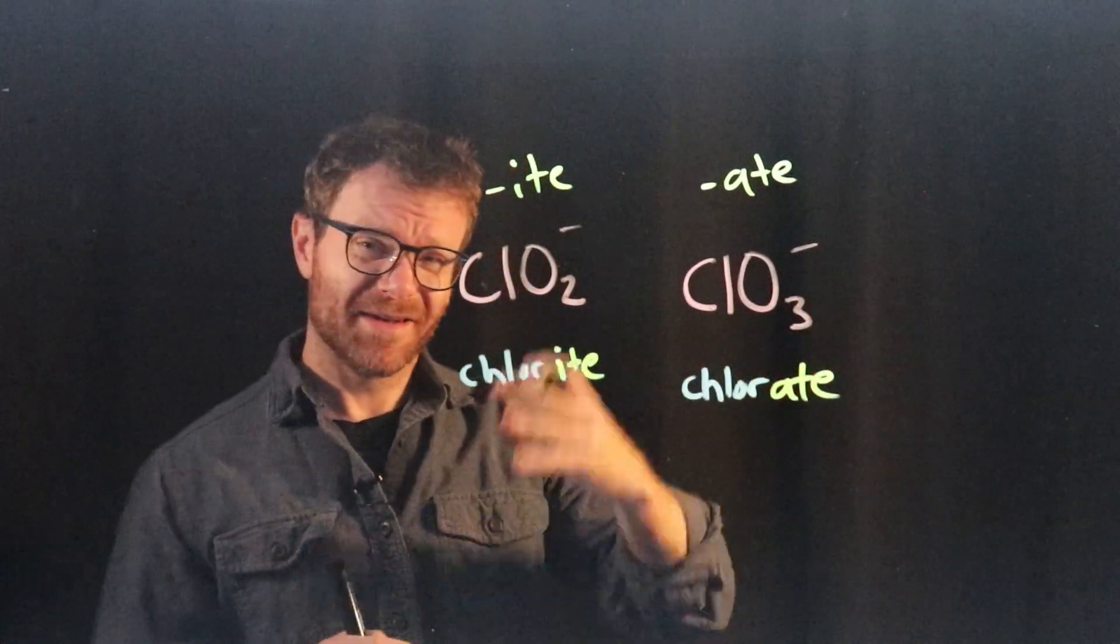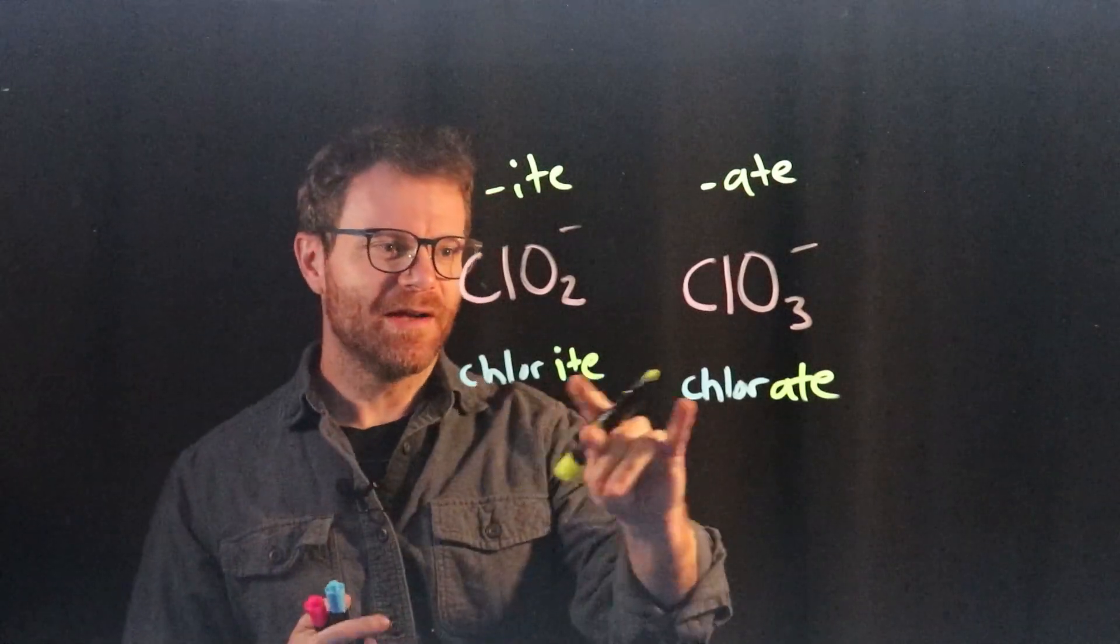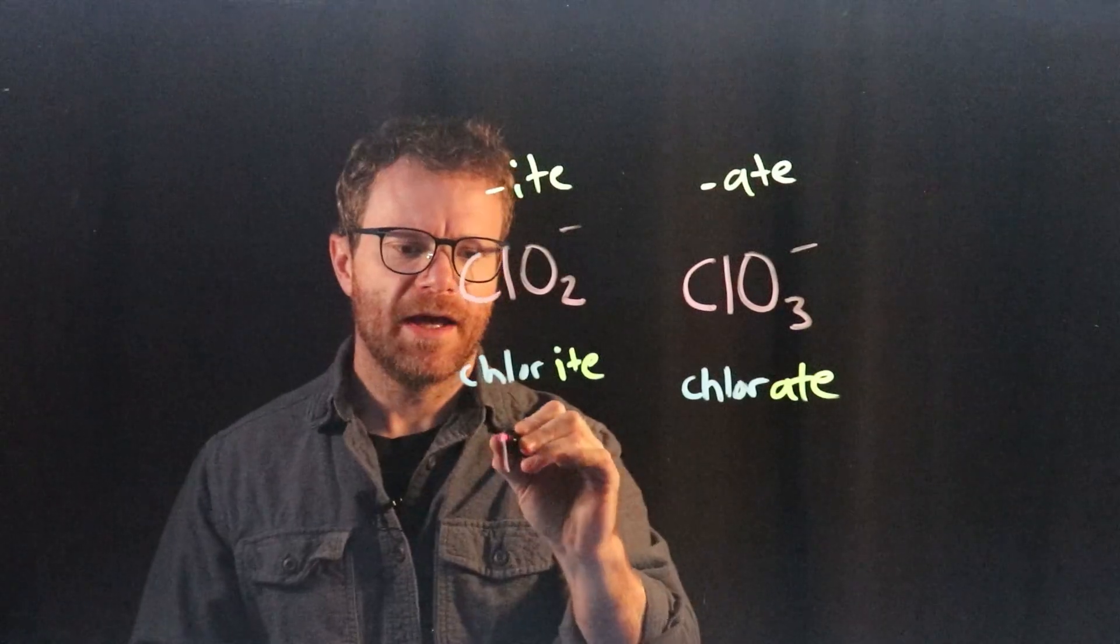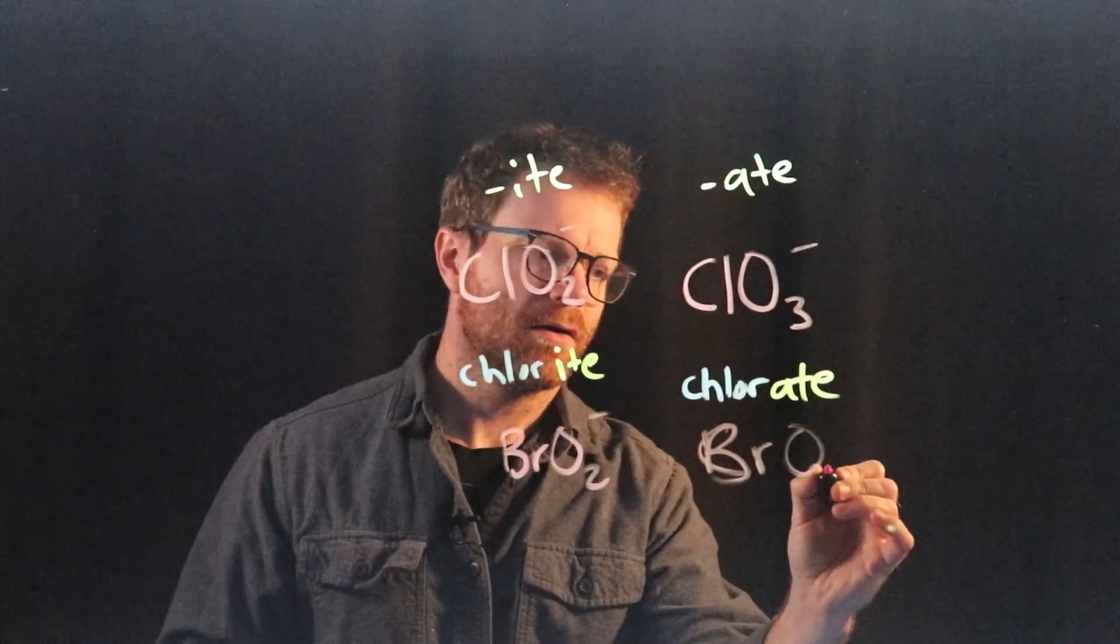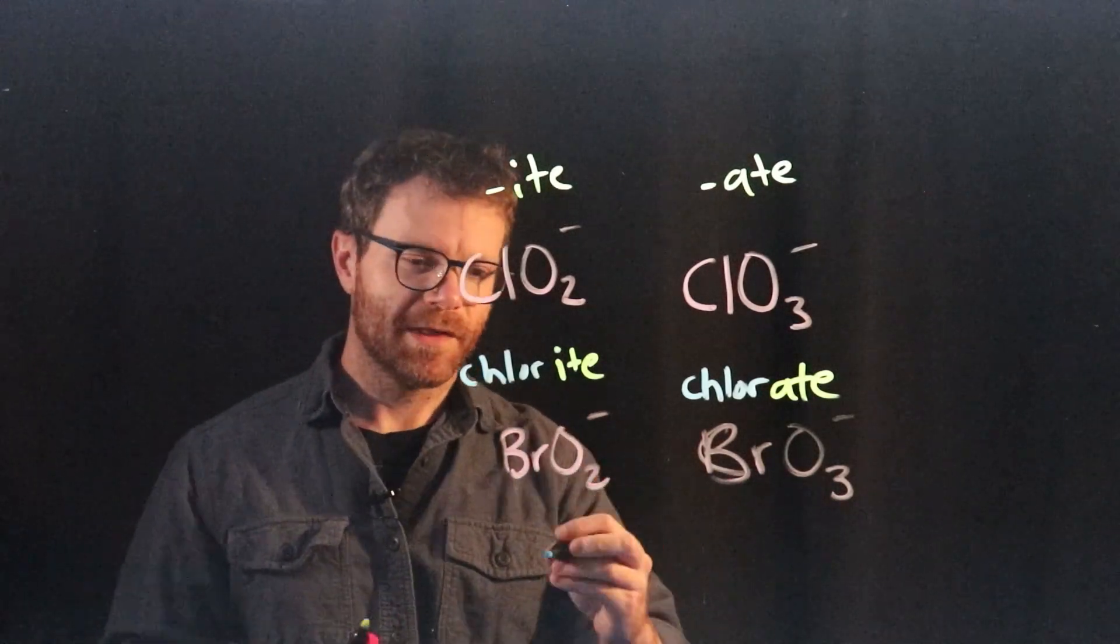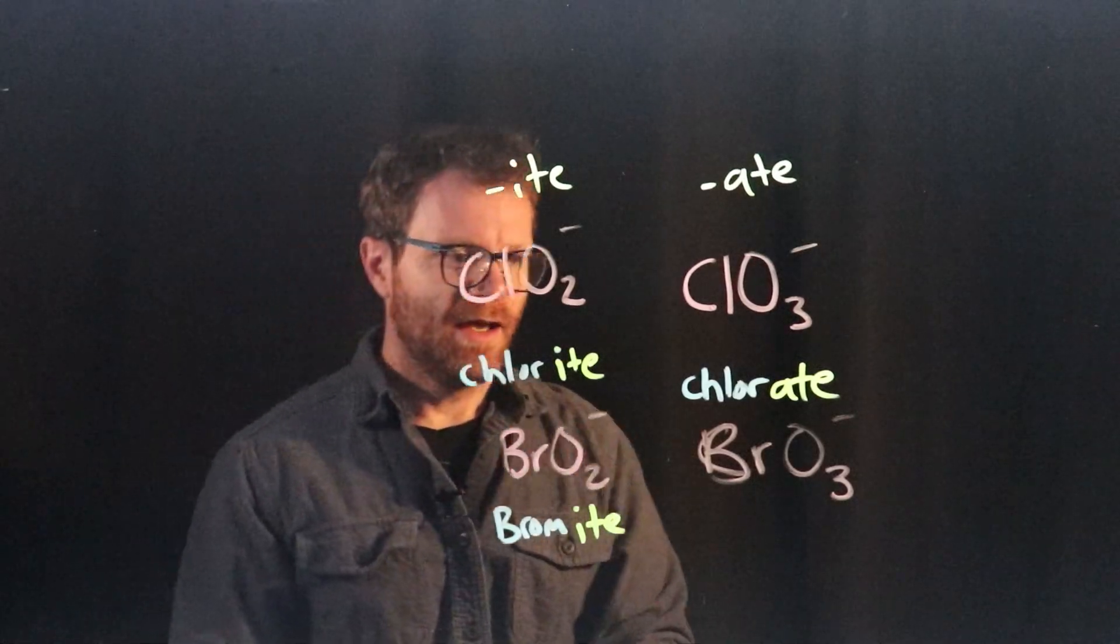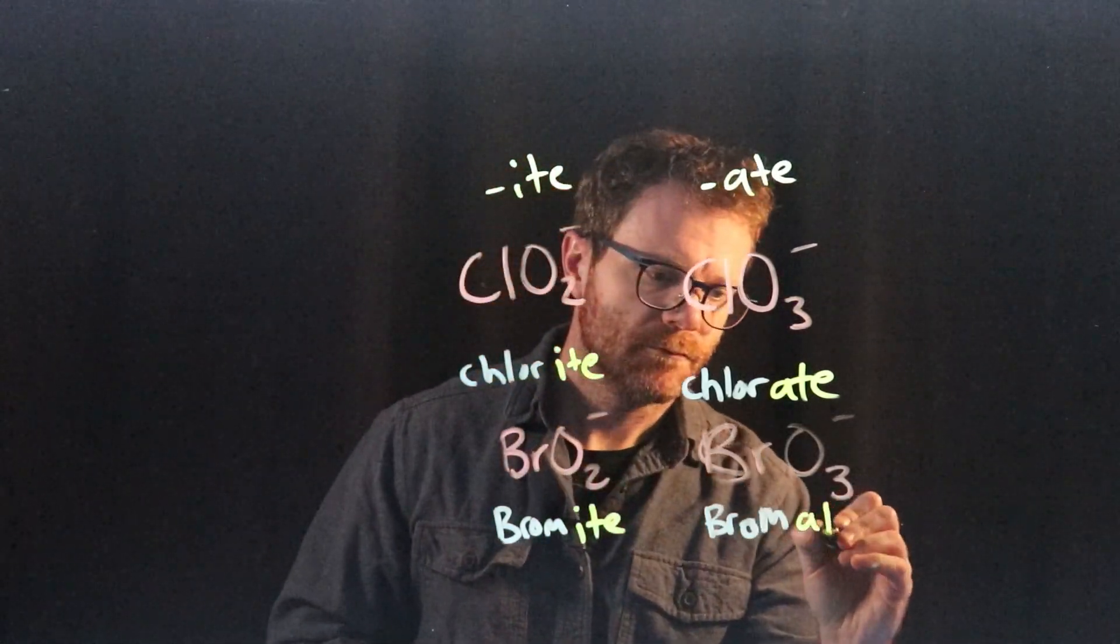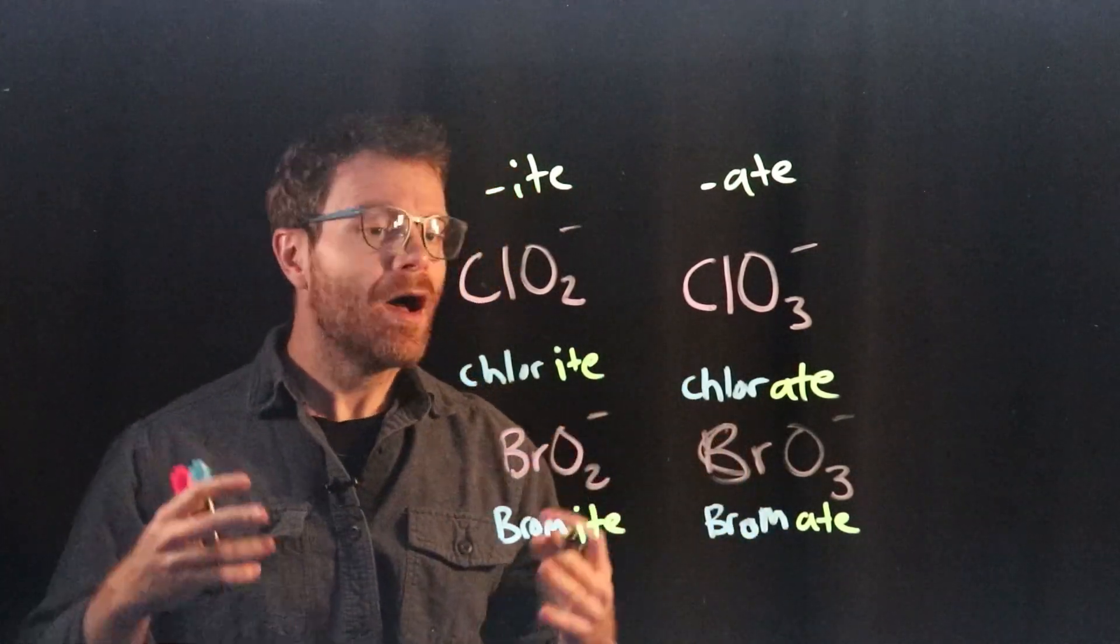Okay, now with these halogens, the elements in column 7A of the periodic table, or 17, there are even more versions of the polyatomic ions other than -ate and -ite. But we'll talk about those in just a moment. Let me give you one more example first. What if we had bromine and oxygen together with a negative 1 charge, and bromine and oxygen together with a negative 1 charge, but this one has 3 and this one has 2. Well, the one with less, we would call bromite. And the one with more, we would call bromate. If it feels like I'm beating a dead horse, it's because I'm really trying to make this sink in. Fewer oxygens, -ite, more oxygens, -ate.